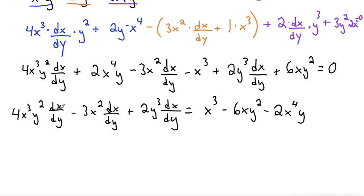From here we're going to factor out dx/dy out of all the terms on the left side. So I'll make dx/dy, and then what's left is 4X cubed Y squared minus 3X squared plus 2Y cubed, and then the right side will stay the same.